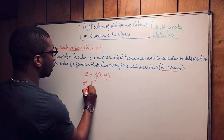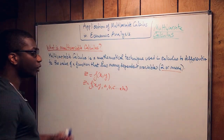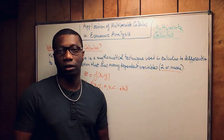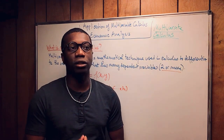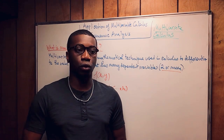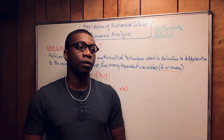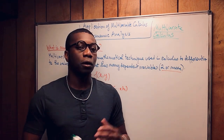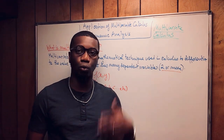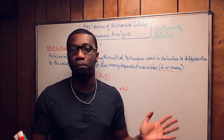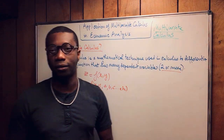You can have Z equals F of X, Y, A, B, C, etc. — it doesn't stop. But why do we use it in economics? We use multivariable calculus in economics because it is perhaps the most realistic approach to understand complex mechanisms in the economy. In the economy, whether at the micro level or macro level, people are trying to measure many inputs at the same time — always two or more — and the best technique to handle that is multivariable calculus.